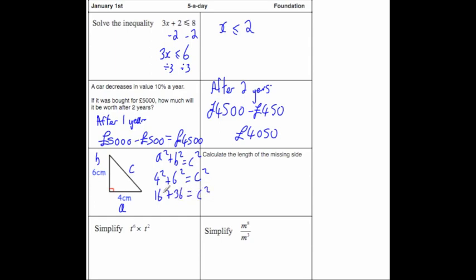If we add these two together, 16 plus 36, that's going to be equal to 52, which equals C squared. Now we don't want C squared, we just want C, so we're going to do the opposite of square, which is square root both sides. So C is equal to the square root of 52. If you do that in your calculator, square root of 52 is equal to, C is equal to 7.211 centimeters.